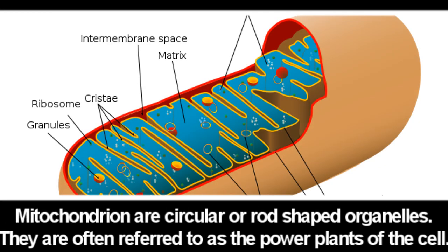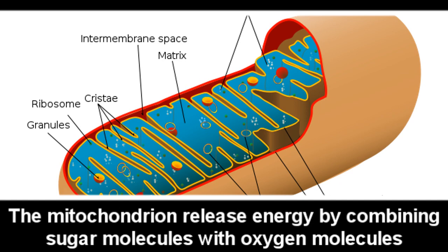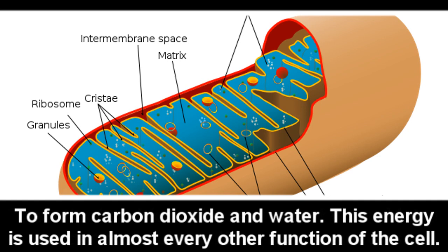Mitochondria are circular or rod-shaped organelles. They are often referred to as the power plants of the cell. They provide the cell with energy. In a process called cellular respiration, the mitochondria release energy by combining sugar molecules with oxygen molecules to form carbon dioxide and water. This energy is used in almost every other function of the cell.